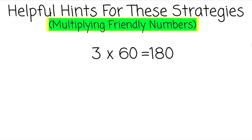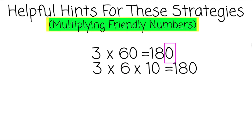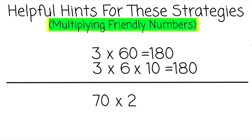It's important to know why you can add that zero. In this case, it's because 60 represents 6 times 10, or 6 tens. So when adding zeros to your products, it's important to always remember why you can do that — because 60 represented 6 times 10.